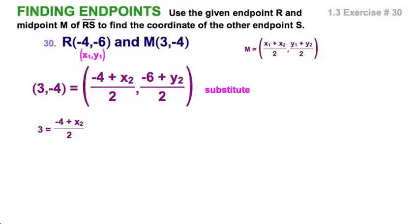Again, for the x's, or abscissas, 3 is equal to negative 4 plus x2 over 2. Solve. And I can see that x2 is going to be the whole number 10.